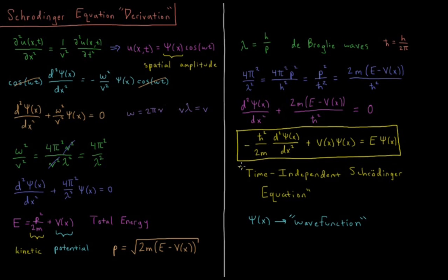This is the time-independent Schrödinger equation. It gives us the wave function of our particle and the total energy of our particle, using its mass, ħ², the second derivative of ψ with respect to x, and the potential energy it feels. The classical wave equation gave us classical waves; this gives us quantum wave functions for any particle we can solve it for. To solve the Schrödinger equation for a given particle, we need to specify its mass and the potential energy it feels as a function of position. With those two things specified, we can solve the equation to get the wave function and the energy. Next, we'll start applying this to specific model systems.